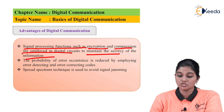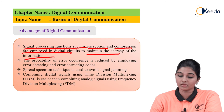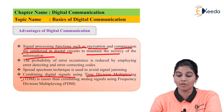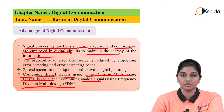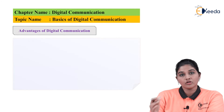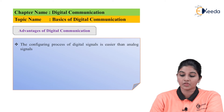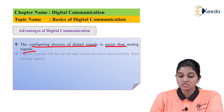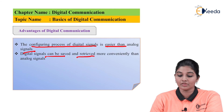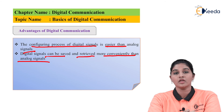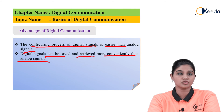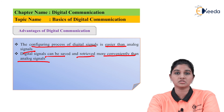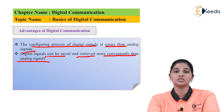The spread spectrum technique is used for signal jamming prevention. Combining digital signals using time division multiplexing (TDM) is easier than combining analog signals using frequency division multiplexing (FDM). The configuring process of digital signals is easier than analog. Digital signals can be saved and retrieved more conveniently — if you want to store data for future use, it is much easier to store and process data in digital form than in analog form.